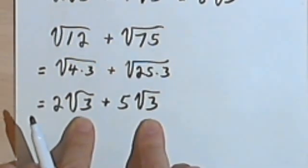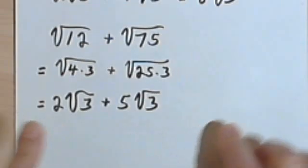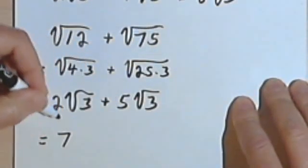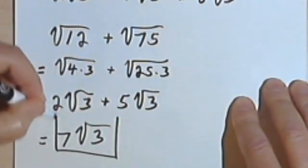I have 5 times the square root of 3. Now that my radicals, my radicands, are both the same, I can add these two together pretty easily. So I've got 2 plus 5 is 7. So it's going to be 7 times the square root of 3.